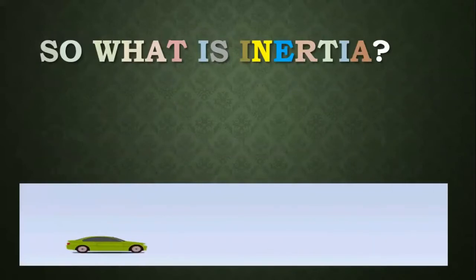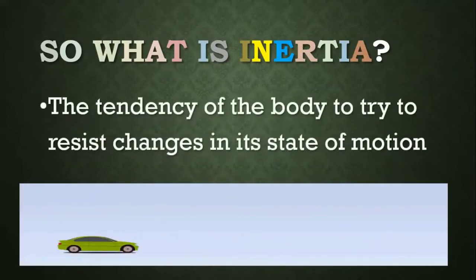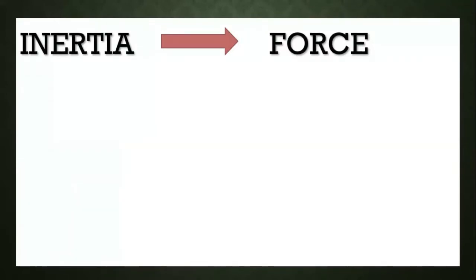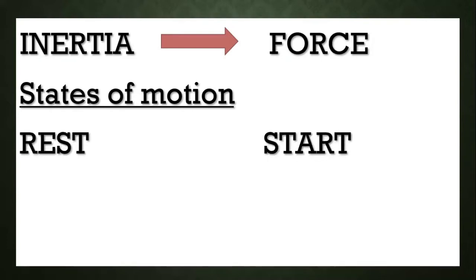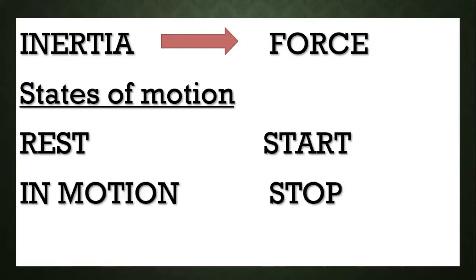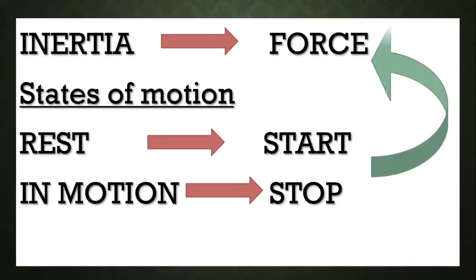Inertia is the tendency of the body to resist changes in its state of motion. Inertia has the ability to change the states of motion — if an object is at rest, inertia may start it, and if the object is in motion, inertia has the ability to stop it. To start and to stop an object, there is a need for that force, and that force is inertia.